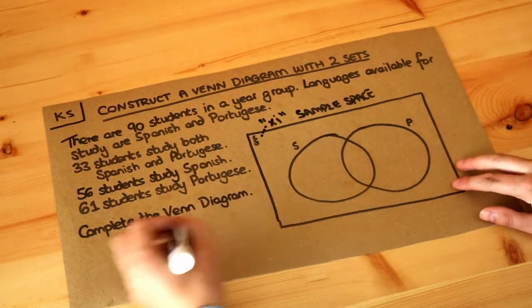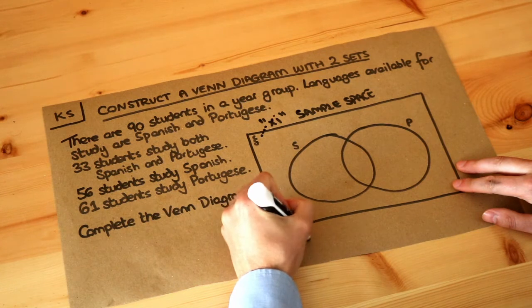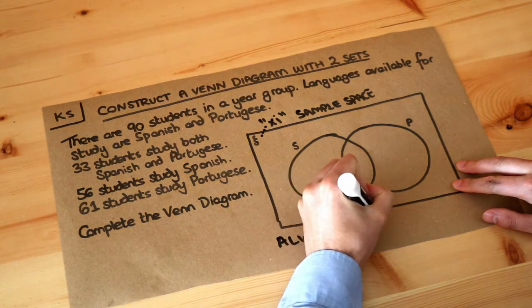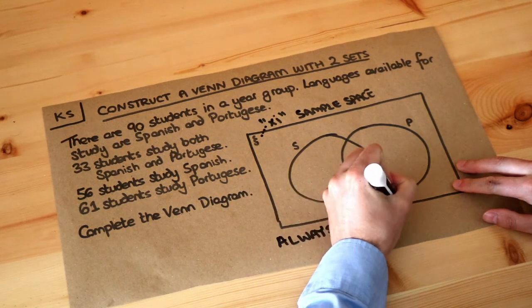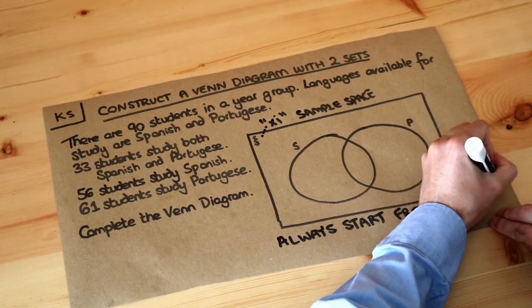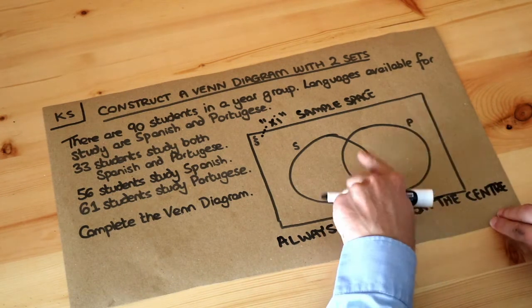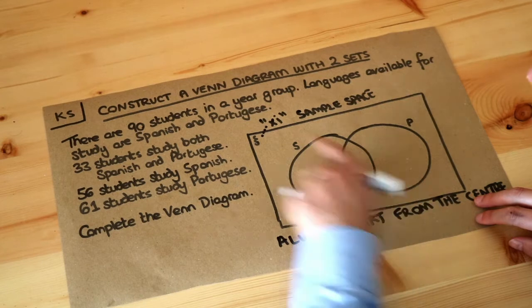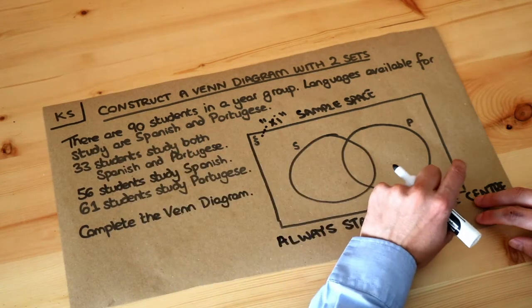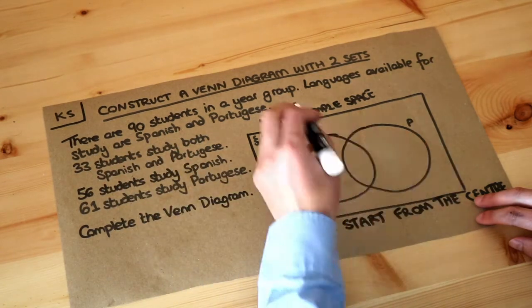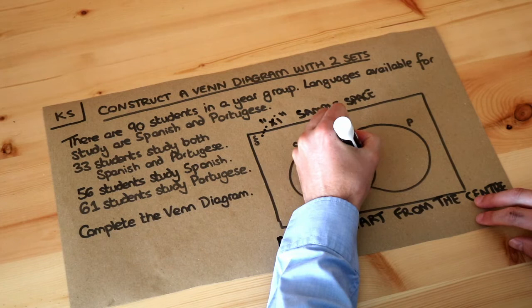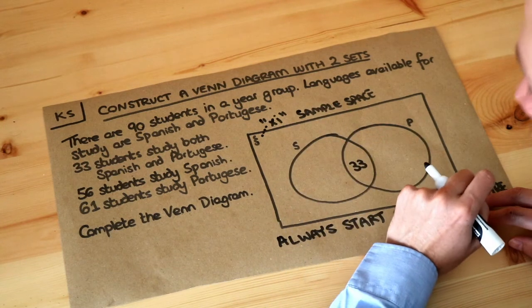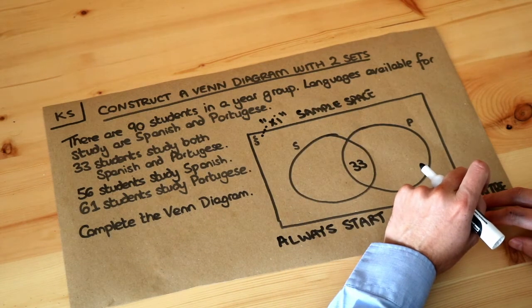The strategy is to always start from the center of your Venn diagram and work your way outwards. Can we work out the center value — the people who study both Spanish and Portuguese? It says 33 students study both, so we put 33 in the center. The number in a region tells us how many people are in that region.